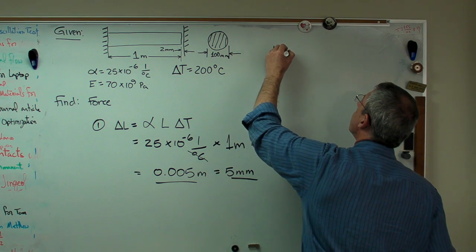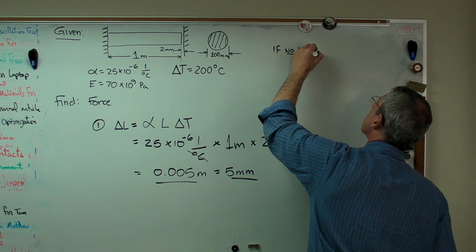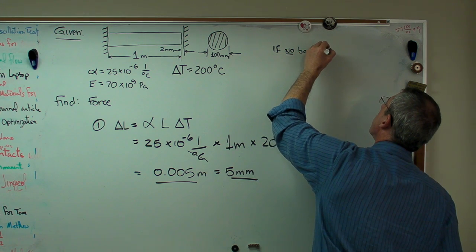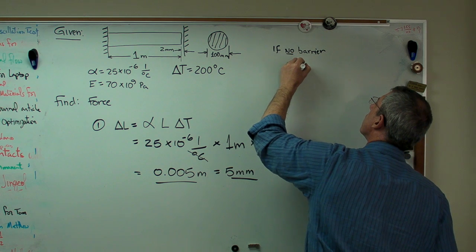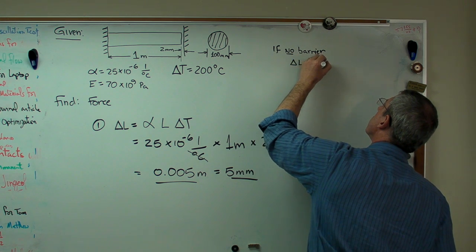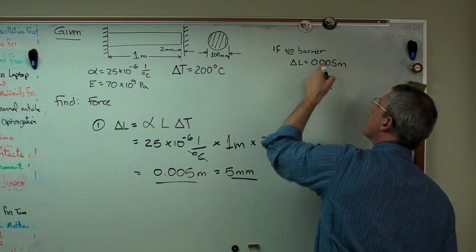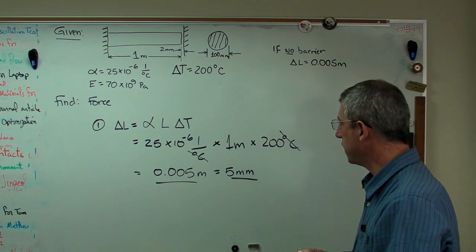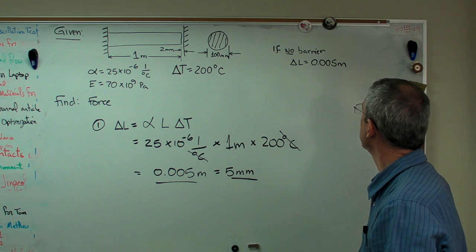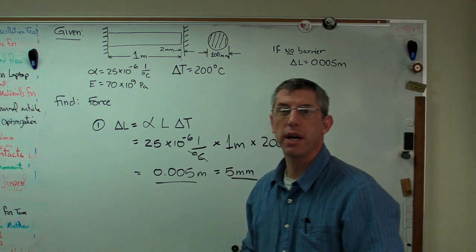So if no barrier, then delta L equals 0.005 meters. Now, I'm writing that up there because I'm going to have to erase this. I don't have a whole lot of space on my board. So we've got that part of the problem done.